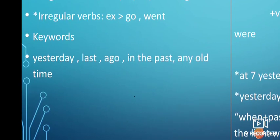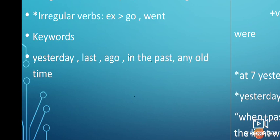Keywords for past simple: yesterday, last, ago, in the past, or any old time. When I say a character, someone, or a date like 1666 or dinosaurs — this means past. So yesterday, last, ago, in the past, and any old time or date tell us we are in past simple tense.